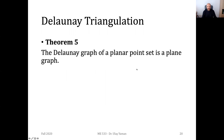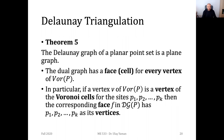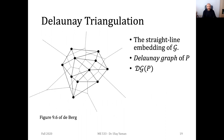Let's look at some other theorems. Theorem 5 states that the Delaunay graph of a planar point set is a planar graph. The dual graph has a face for every vertex of the Voronoi diagram of the point set P. Additionally, if a vertex V of the Voronoi diagram is a vertex of the Voronoi cells for sites P1, P2, and P3, then the corresponding face in the dual graph has these Voronoi sites as its vertices.